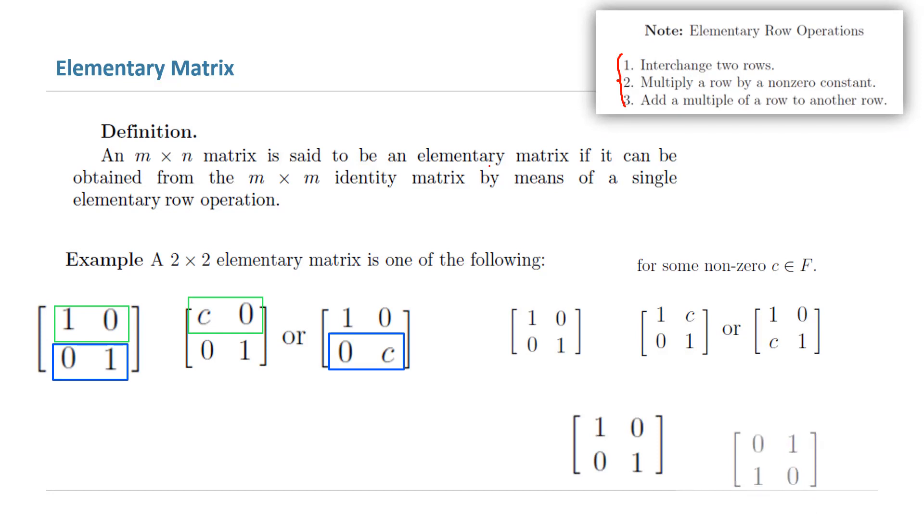Another step is interchanging two rows. One and zero on the first row is now one and zero on the second row, and zero and one on the second row of the identity matrix is going to be on the first row of your elementary matrix.